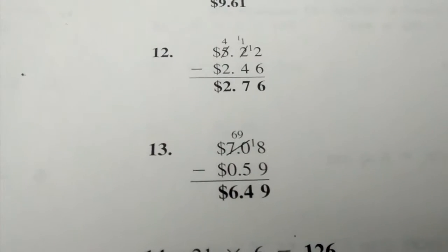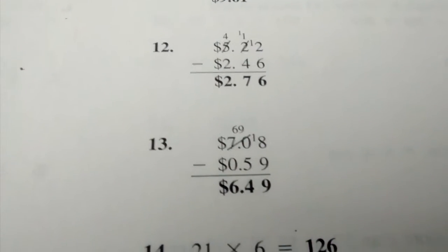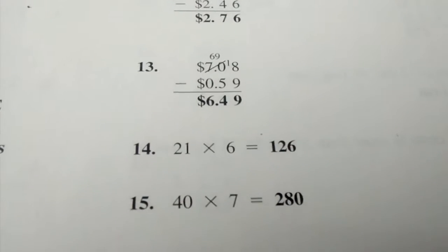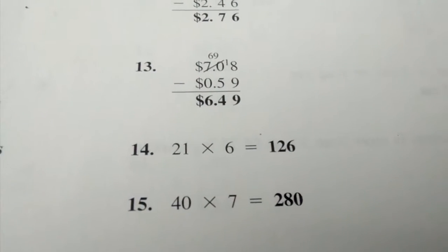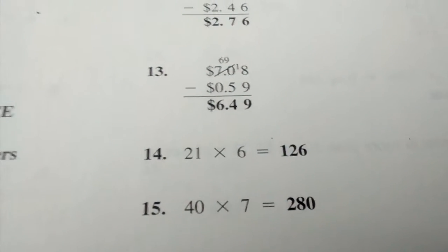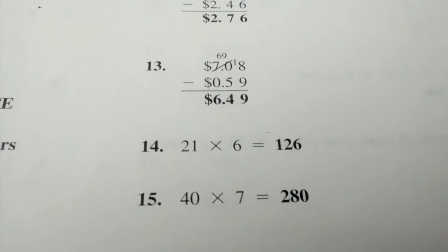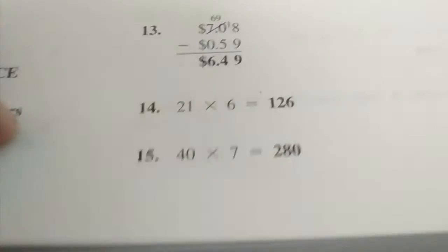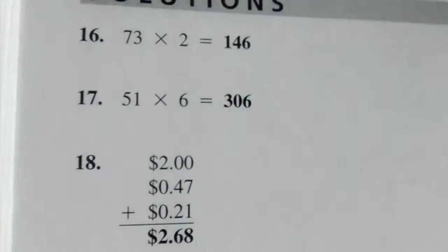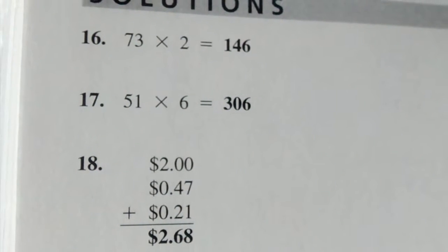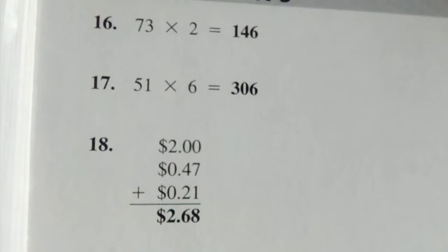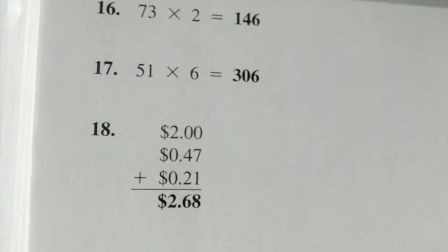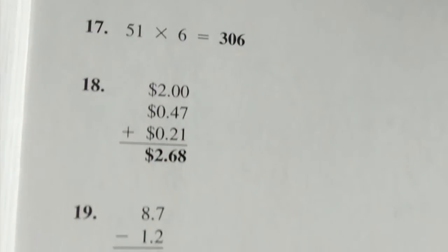Number thirteen: six dollars and forty-nine cents. Number fourteen: one hundred twenty-six. Number fifteen: two hundred eighty. Number sixteen: one hundred forty-six. Number seventeen: three hundred six.